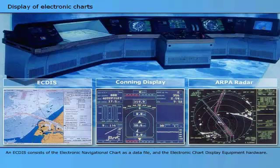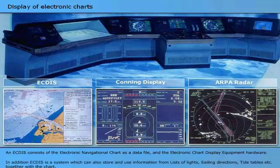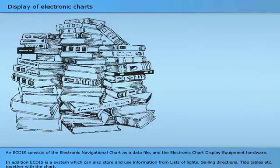This is the definition of a system which shows or integrates on one display what we earlier have separated into three different places on the bridge of a ship: the chart, the position, and the radar. In addition, ECTIS is a system which can also store and use information from lists of lights, sailing directions, tide tables, etc., together with the chart. That is the reason why IMO defines ECTIS as electronic chart display and information system.